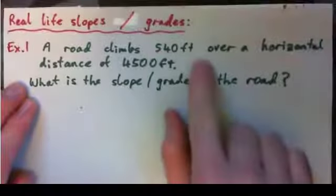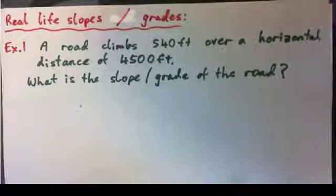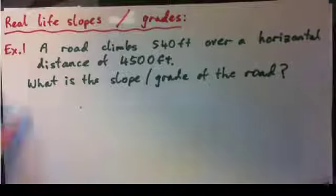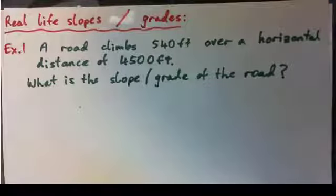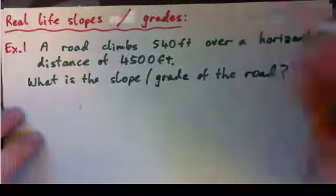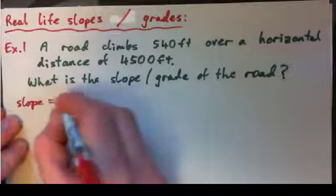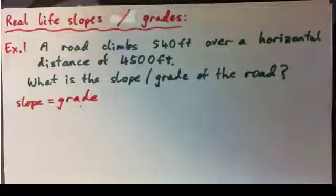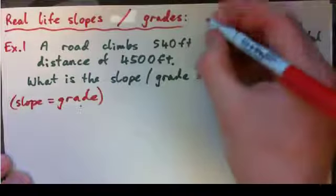In example 1, if a road climbs 540 feet over a horizontal distance of 4500 feet, we have to get the slope or grade of the road. First thing: slope equals grade — it is the same thing, grade is just another word for slope. Write that down. Slope equals grade.